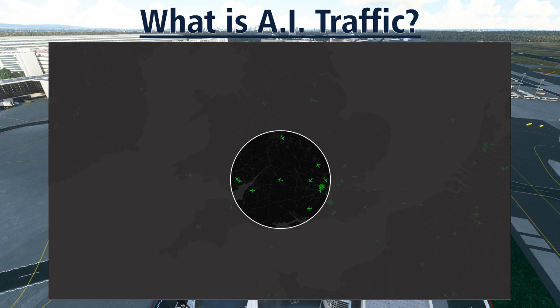For each aircraft you will see, VATSIM sends the aircraft call sign, position, and orientation — that is latitude, longitude, altitude, pitch, roll, heading — as well as speed. This information is sent to your client, and your client in turn interfaces with your simulator and tells the simulator what to draw and where.